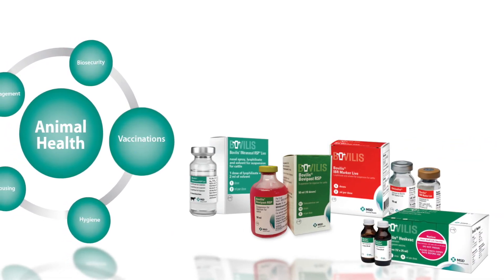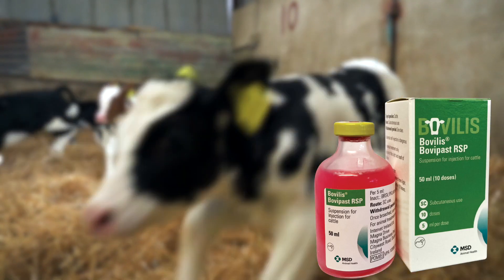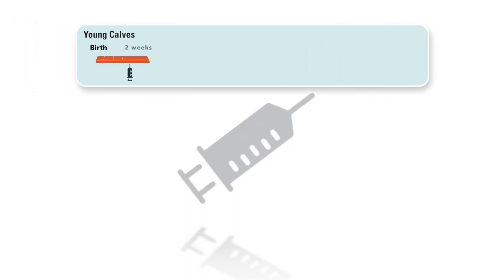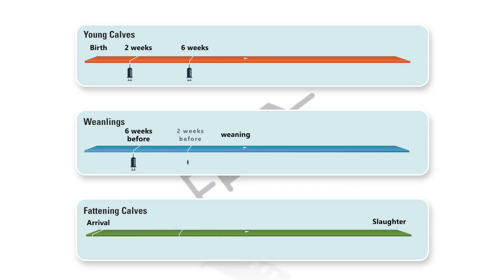Farmers can protect their calves against Mannheimia haemolytica, RSV, and PI3 by vaccinating their calves with Bovilis Bovipast RSP. This provides the broadest protection on the market against Mannheimia haemolytica and protects against RSV and PI3. Bovilis Bovipast RSP can be administered to calves from around two weeks of age. The primary course involves two doses of five mils under the skin, four weeks apart, and you can also give a booster shot two weeks prior to a high-risk period.